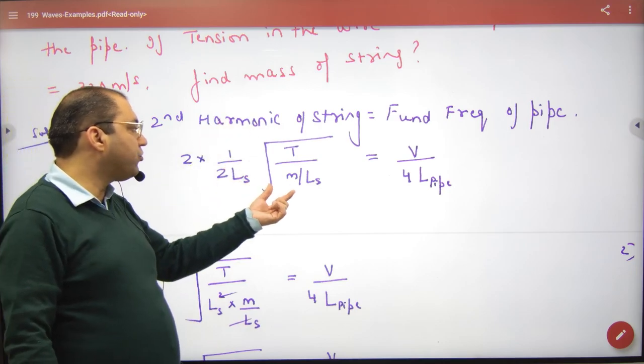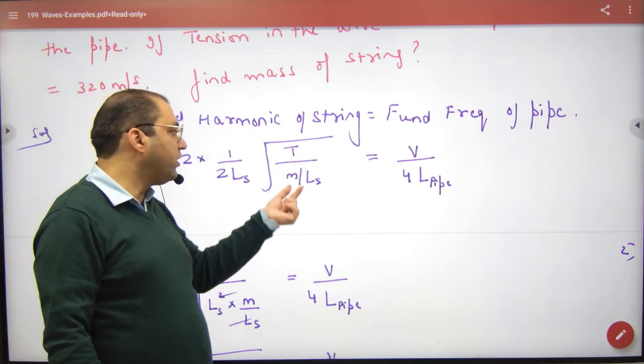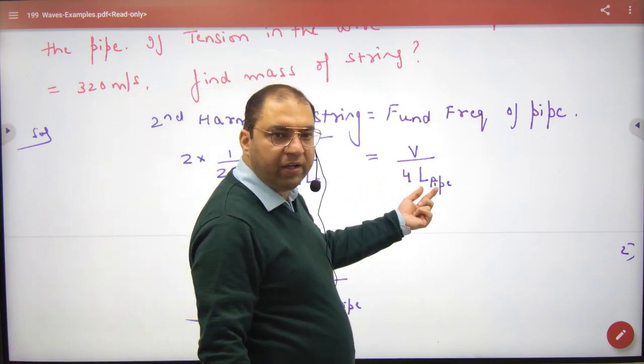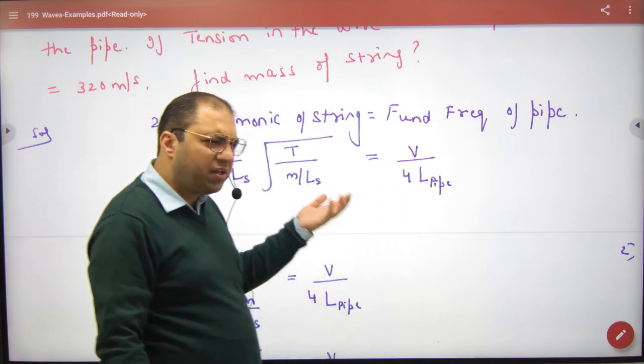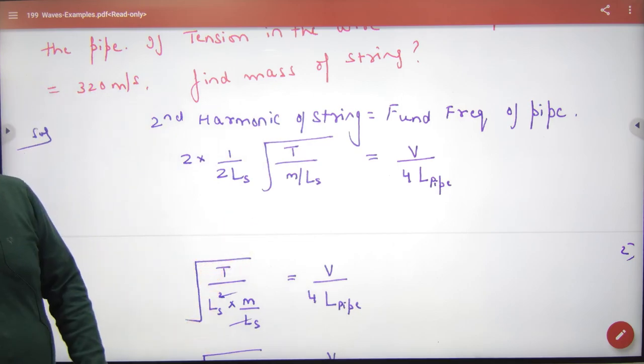What is the harmonic frequency? For the string, it's 1 by 2l root T by mu. For the pipe, it's V by 4l. The equation is given here, and this was the main statement.